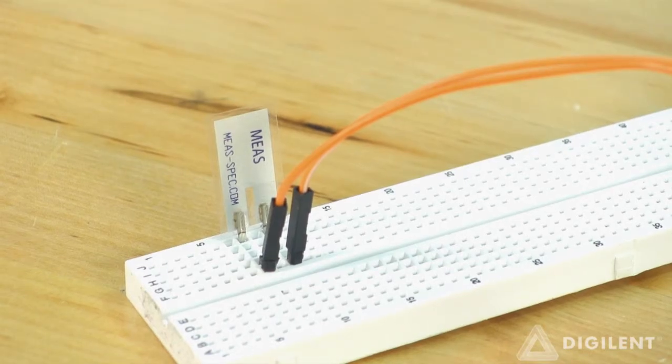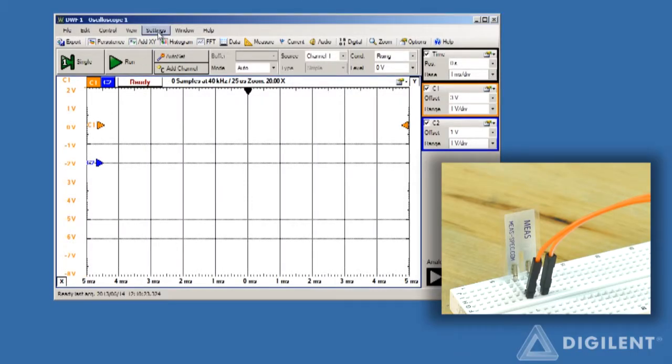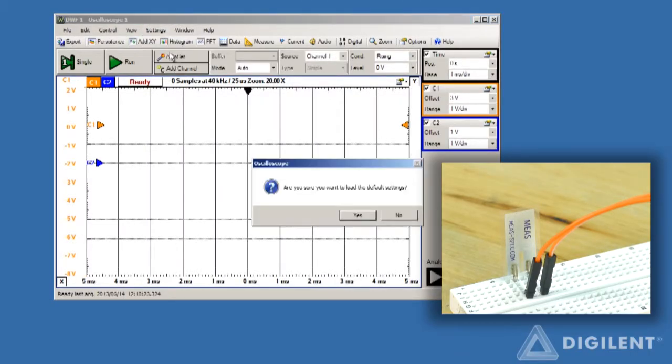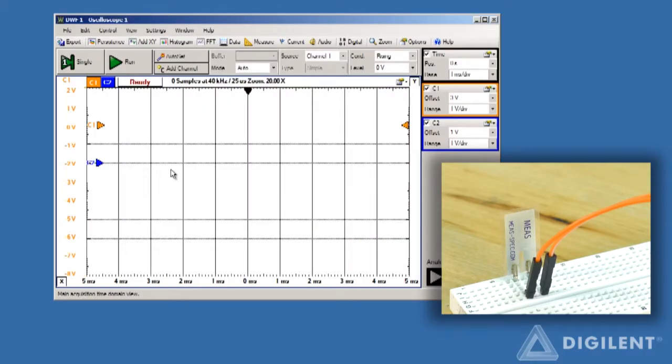Now our oscilloscope will measure the voltage output of the sensor. Since this demonstration doesn't depend on any previous projects, I'll return the oscilloscope to its default settings. This will, hopefully, help you follow along if you so desire.